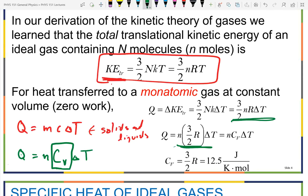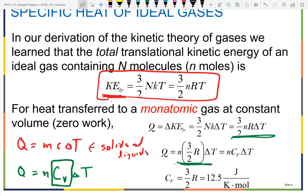For an ideal gas, we don't use mcΔT — we use n·CV·ΔT for constant volume. Examples of monatomic ideal gases include helium, neon, argon, krypton, xenon, and radon — that's about it. We don't like radon gas much, and there's not much of it thankfully.